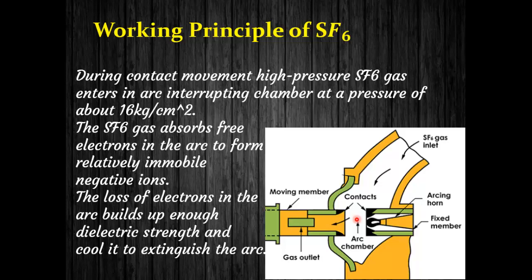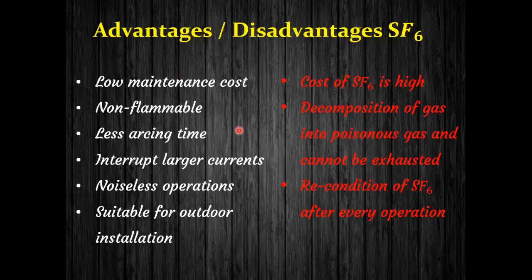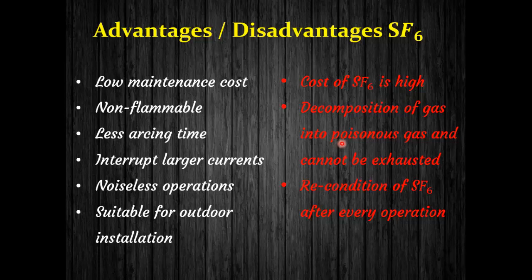The advantages of the SF6 circuit breaker include low maintenance cost, non-flammable gas, very short arcing time, ability to interrupt large currents due to high dielectric strength, noiseless operation, and suitability for outdoor installation. The disadvantages are that the cost of SF6 gas is very high, and decomposition of the gas results in poisonous byproducts which cannot be exhausted into open air, requiring reconditioning of the SF6 gas after every operation.